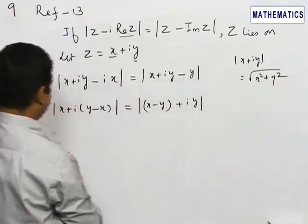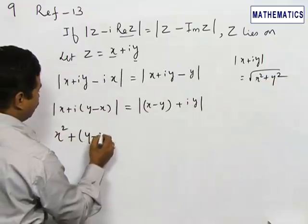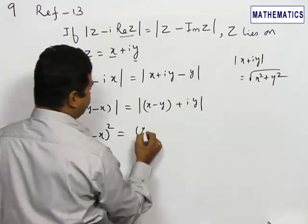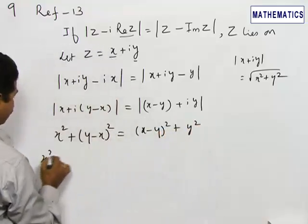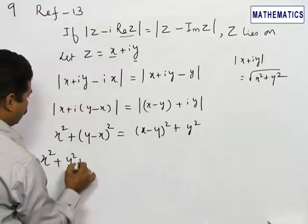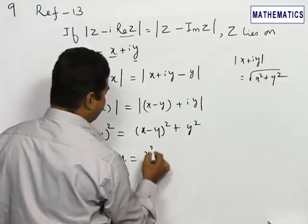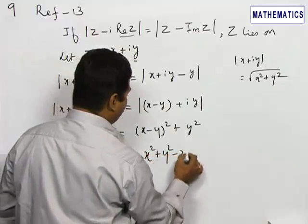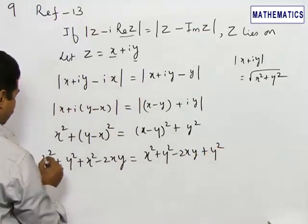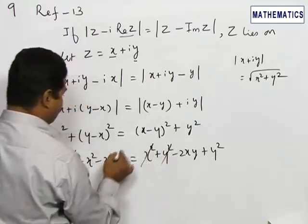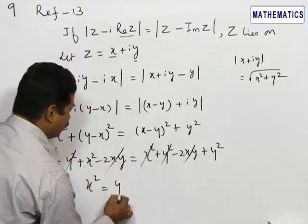Using that condition, when we remove the modulus it will be x squared plus (y minus x) whole squared equals (x minus y) whole squared plus y squared. Expanding this: x squared plus y squared plus x squared minus 2xy equals x squared plus y squared minus 2xy plus y squared. We can eliminate x squared and y squared as well as 2xy. The balance is x squared equals y squared.